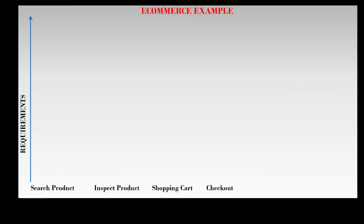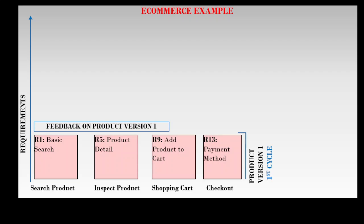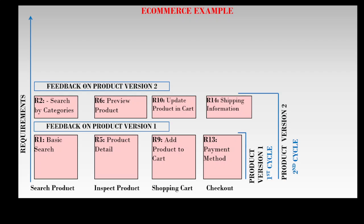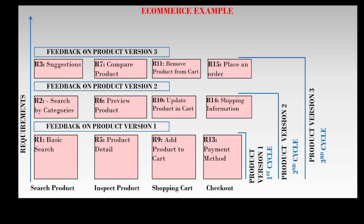For the e-commerce example, in the first cycle the first product version is built but not delivered and feedback is received. This feedback is used to modify the first product version in the second cycle, and new features — search by categories, preview product, update product in cart, and shipping information — are also developed to create a second product version, which is not delivered but feedback is received.